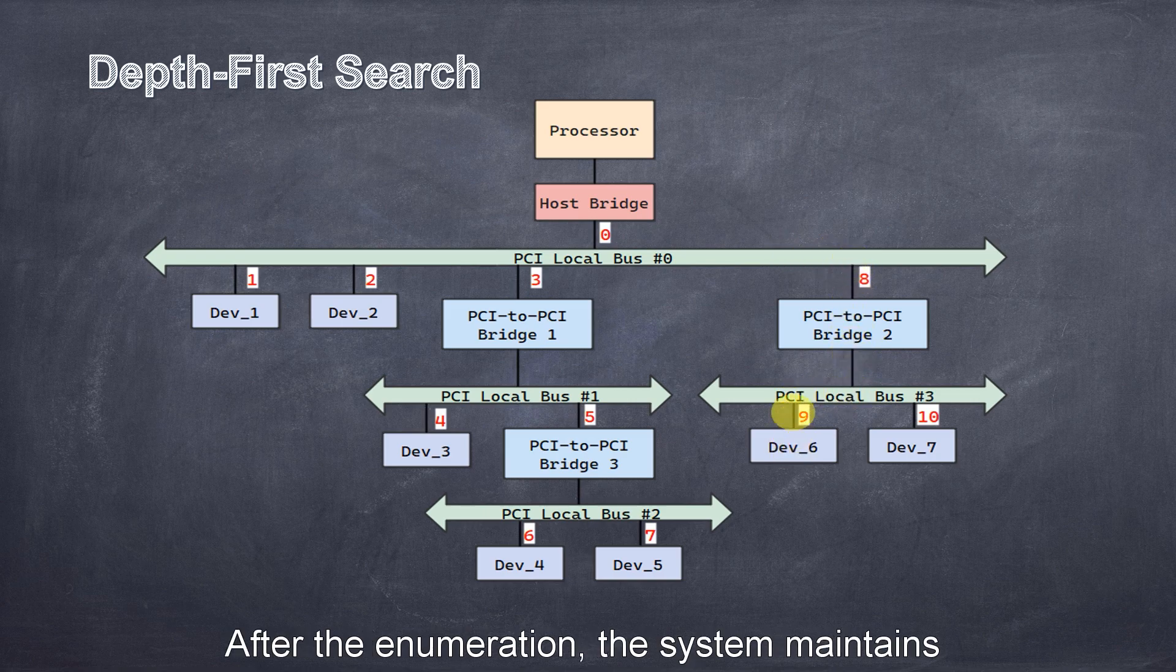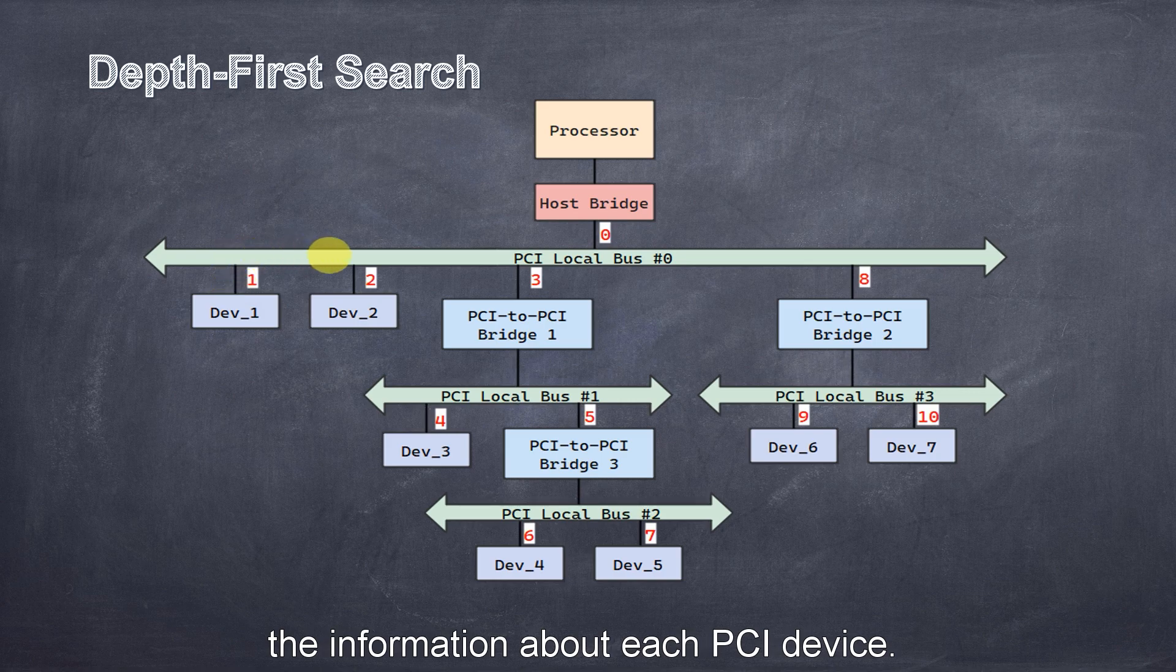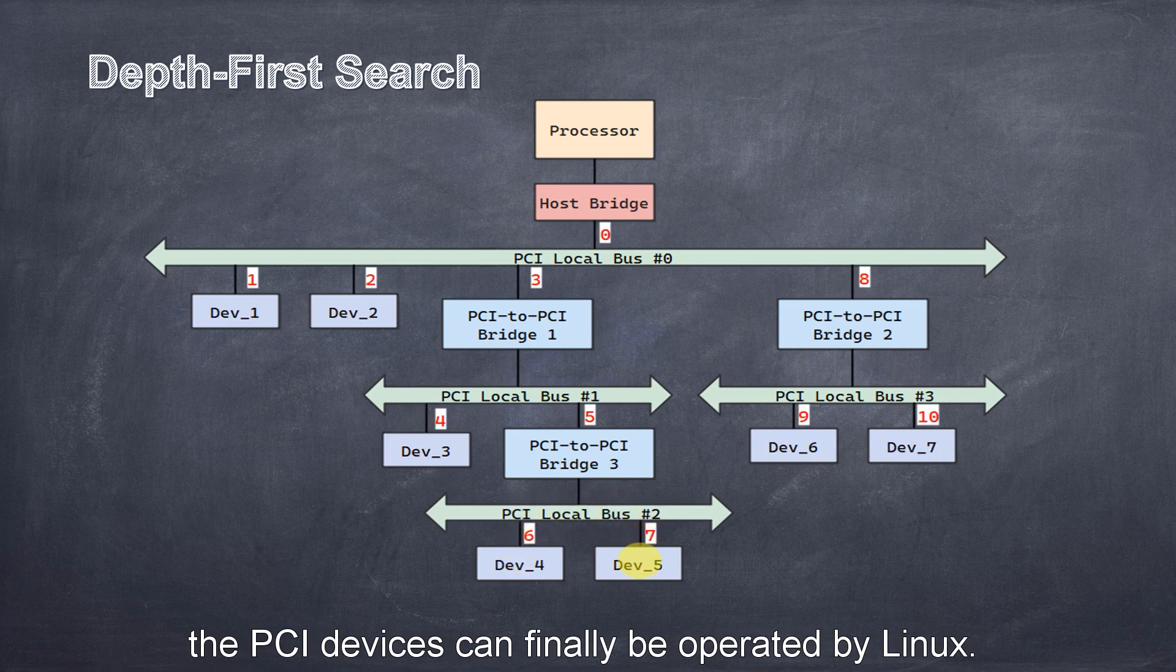After the enumeration, the system maintains the information about each PCI device. With buses and devices created in the system, the PCI devices can finally be operated by Linux.